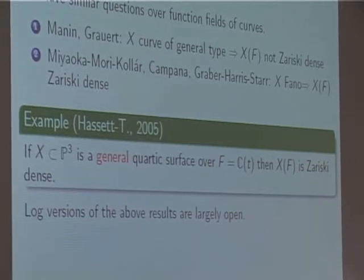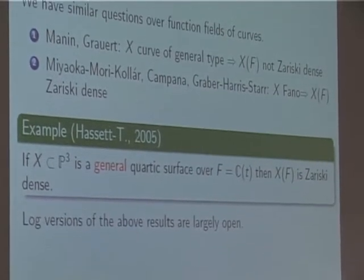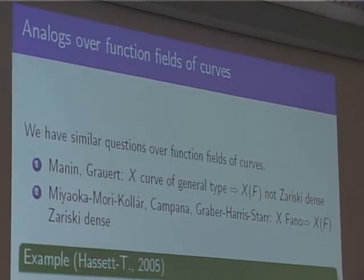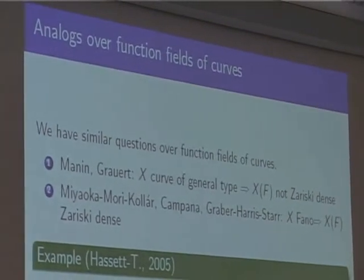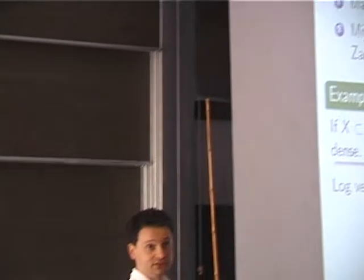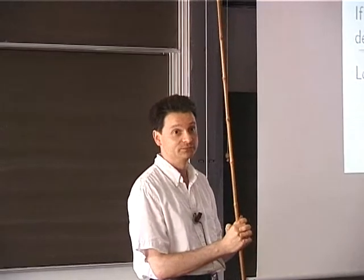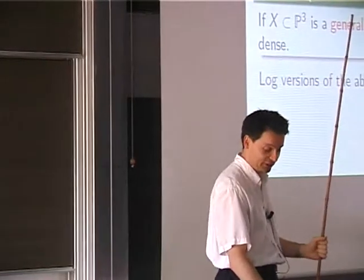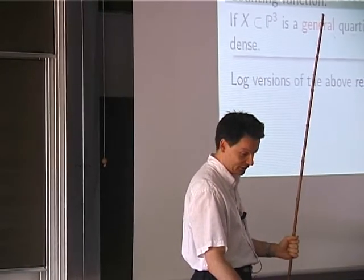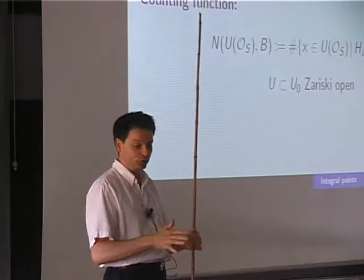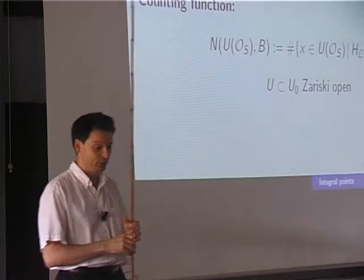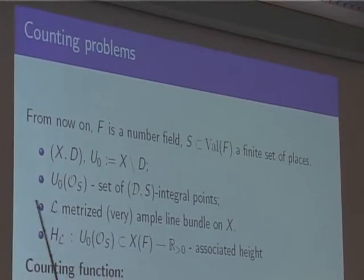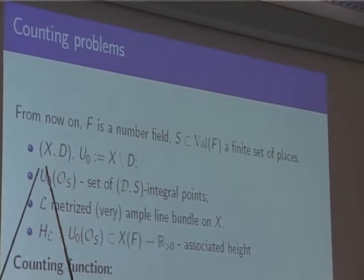This is a consequence of our result with pencils of quartics; in fact we show that over the ground field the points are Zariski dense. Of course cubic surfaces over a number field don't necessarily have points, and quartics as well. In this course we focus on varieties which have many rational and integral points a priori.